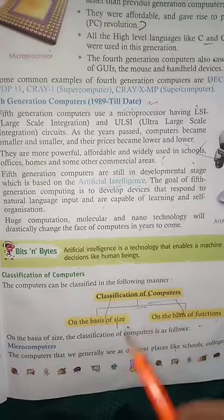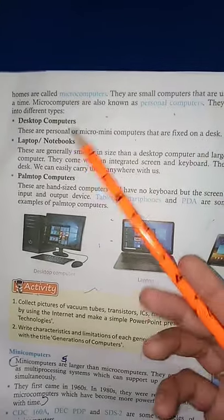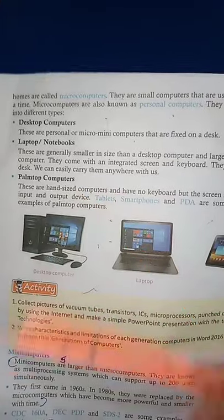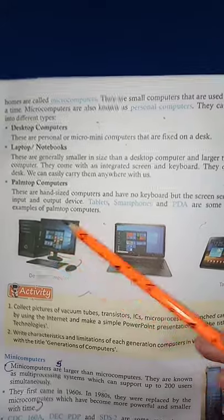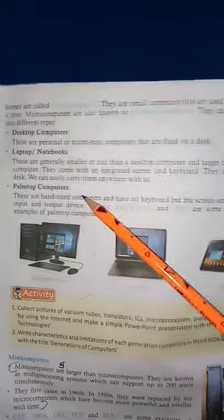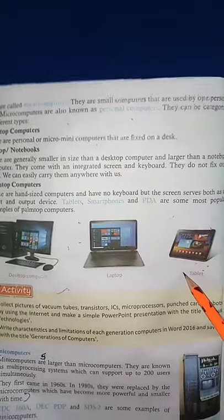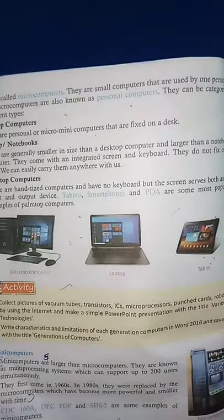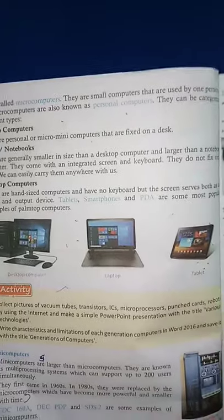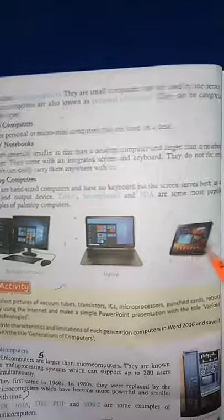जो micro computer हैं, वो generally schools, colleges, offices और घरों में use होते हैं। यह size में बहुत छोटे रहते हैं और एक person at a time इसे use कर सकता है। इन्हें personal computer भी कहा जाता है। इनकी categories हैं: desktop computer, laptop/notebook, और palm top computer। Desktop mostly school और offices में use होते हैं; laptop personal use के लिए; और palm top tablet की तरह होता है जिसमें keyboard नहीं होता।